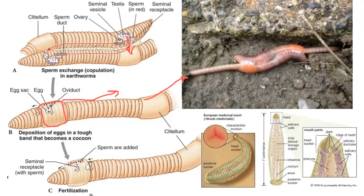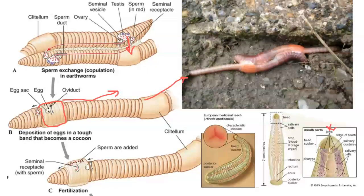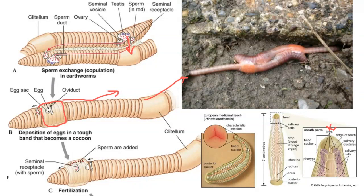Leeches are also segmented worms. They are notable because they have jaws and some rudimentary teeth with head suckers that allow them to attach to their host — and again, they're parasitic, so they leech off of their host.